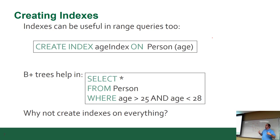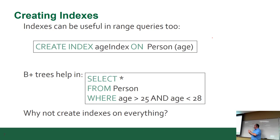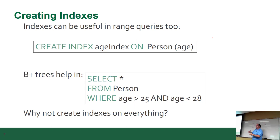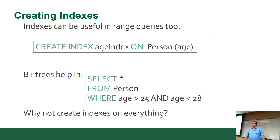Think of it this way: each index requires extra communication, so every time you touch a record, it has to talk to every index one by one. It's like if I had to go to each one of you individually and say 'my name is Dave.' But first I'd have to ask you what my name was, get confirmation, say 'my name is now Dave,' then verify — that took how many interactions? Now imagine doing that a thousand times a second.